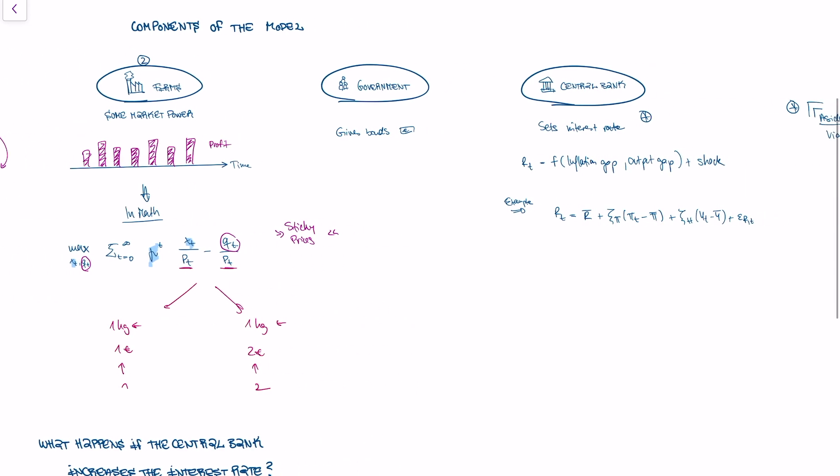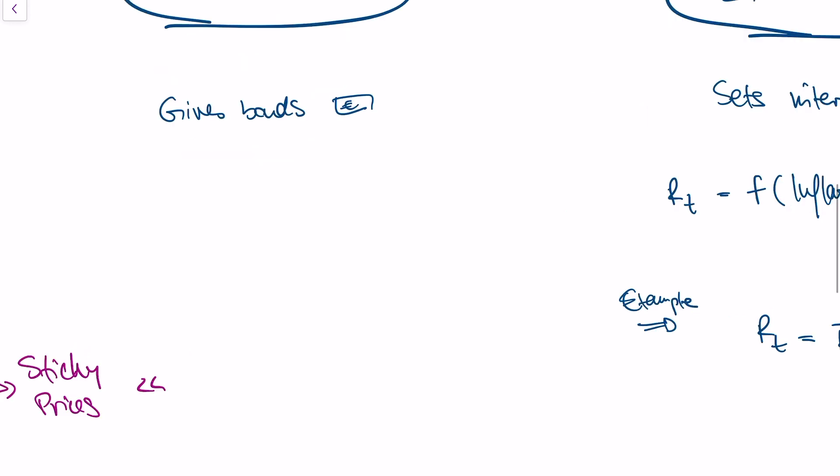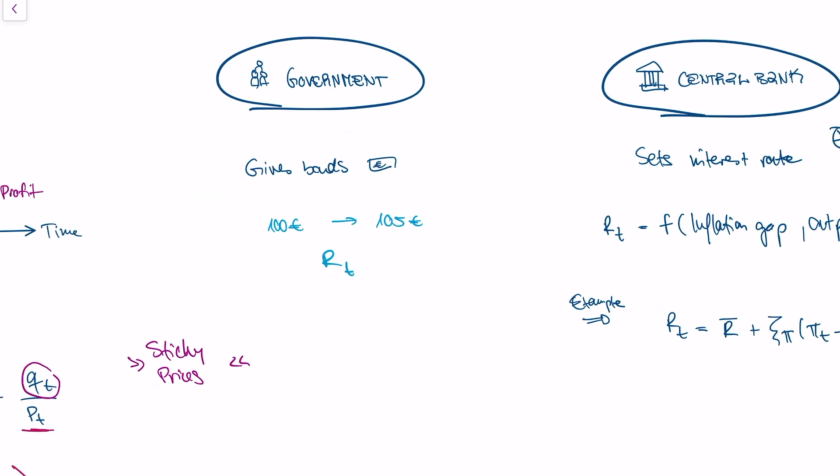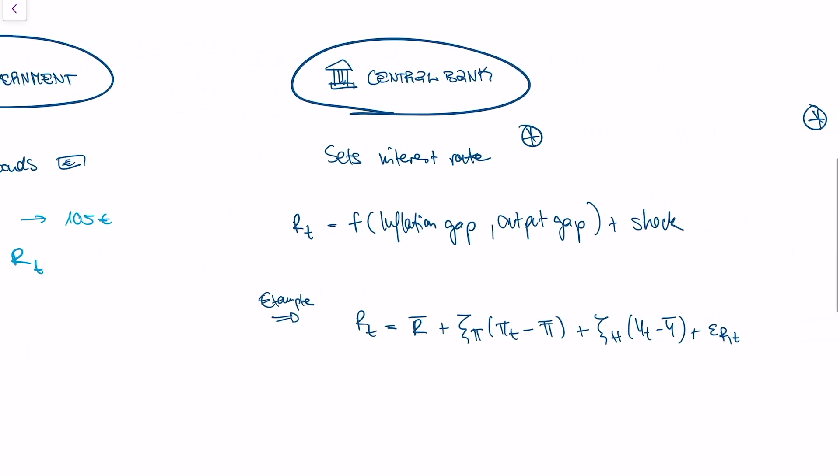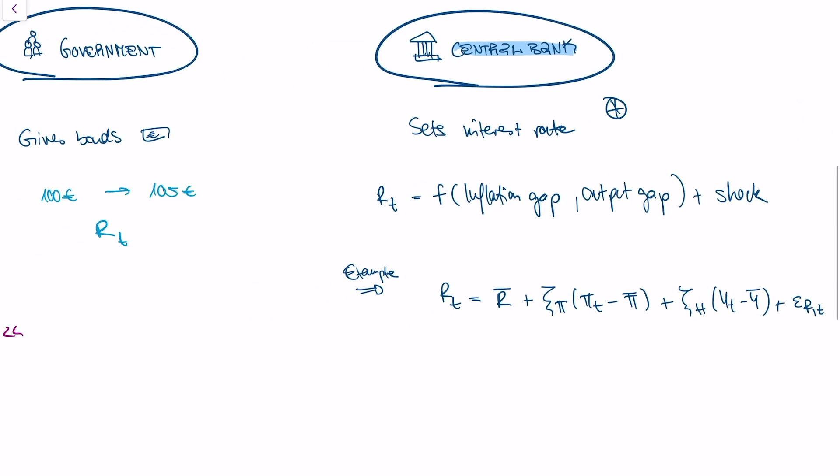We have households, firms. Next is the government. The government is very boring. The government just provides government bonds, so the government basically gives a financial instrument where they say you can give us money, maybe 100 euros, and we will give you money back in one year at an interest rate, maybe 105 euros. This interest rate is called capital R_t. In every modern economy, the interest rate is set by the central bank. So the central bank actually sets the interest rate R_t.